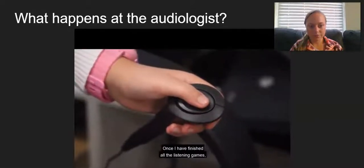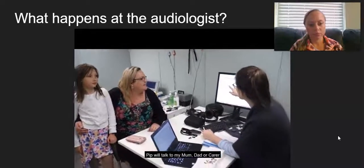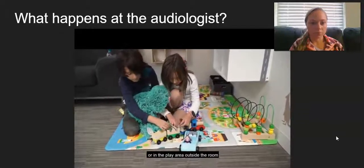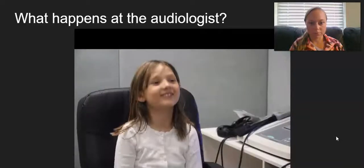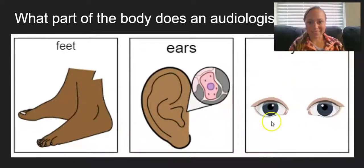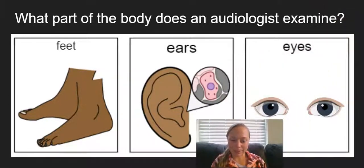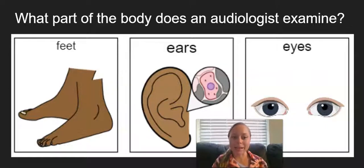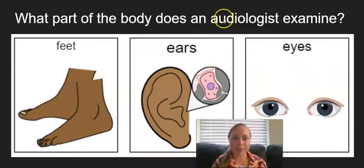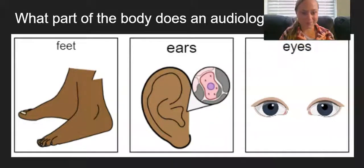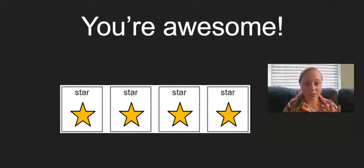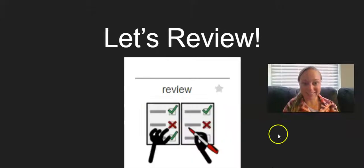And there is also a play area just outside the room with a comfy couch that I can visit too. Whenever I feel like a break, I can ask Pip. Once I have finished all the listening games, Pip will talk to my mom or dad or carer for a while about how I went. I can play in the hearing booth or in the play area outside the room while they are talking. Then it is home time. All right. So obviously nobody is probably going to be named Pip if you go to the audiologist. But at least that gives you some ideas of the hearing games or the hearing examination that you may have done. So what part of the body does an audiologist examine? Feet, ears or eyes? Ears. Audiologists examine the ears. Awesome job, you guys. You've earned four stars. Almost done. So let's review.